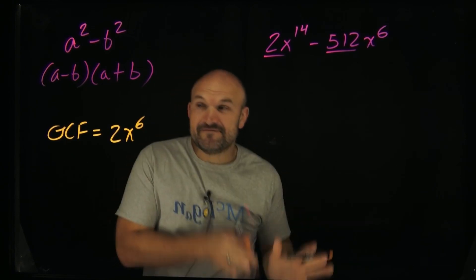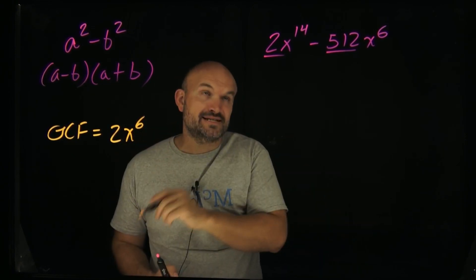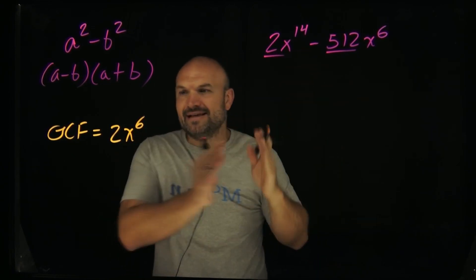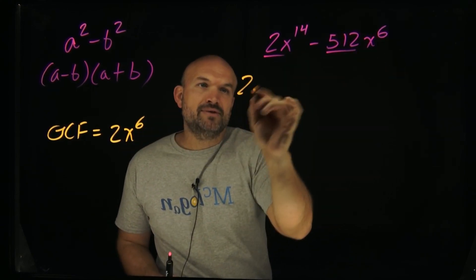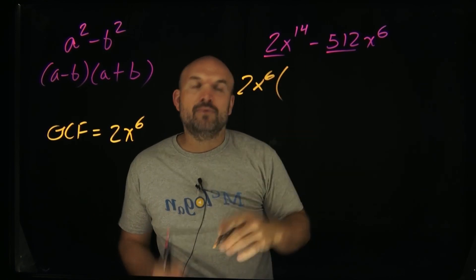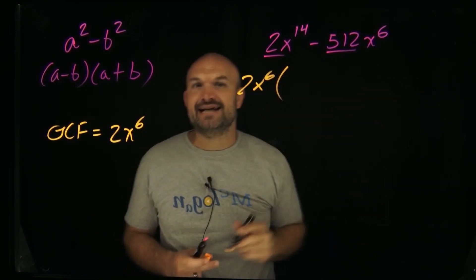So now what I'm going to do is I'm going to factor out this GCF of 2x to the 6th, and then whatever's left over. When I say factor it out, I'm basically dividing the 2x to the 6th by both these terms. And I'm going to rewrite that on the outside. And whatever's left over, I'm going to rewrite inside of these parentheses.